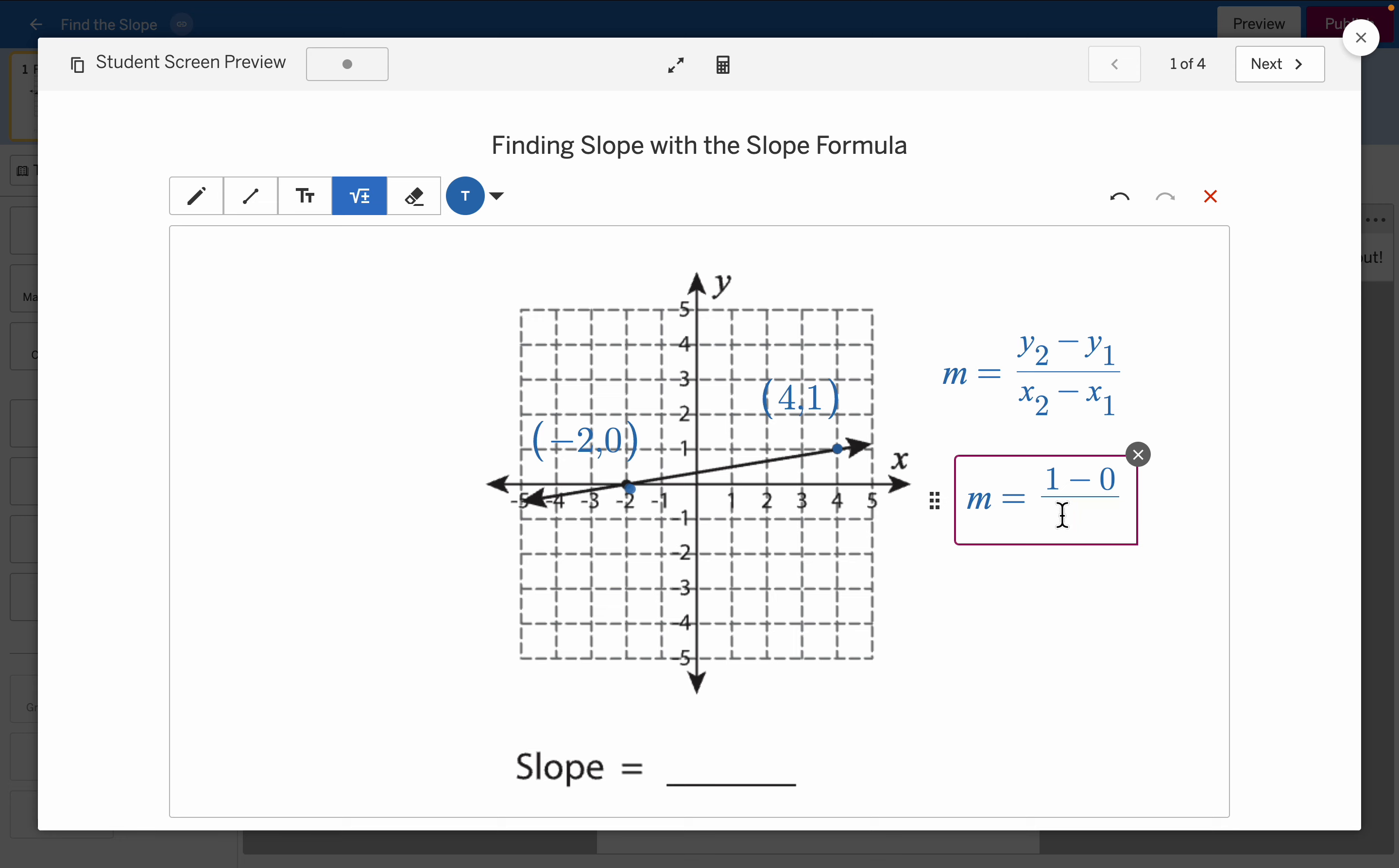Then, my second X value is 4, and my first X value is negative 2. And since I'm subtracting a negative, I want to make sure that I don't leave out that negative sign.